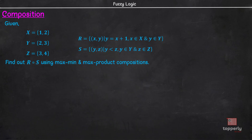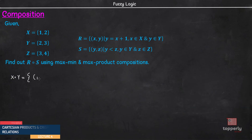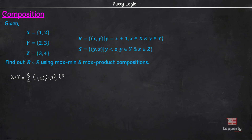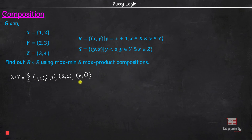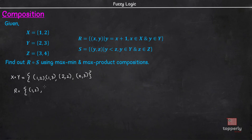Now let us take an example to understand this concept better. We are given the universes X, Y, and Z, and the relations R from universe X to Y and S from universe Y to Z, and we are asked to find R composition S. First, we need to find relation R. X cross Y is given by the set of ordered pairs: (1,2), (1,3), (2,2), and (2,3). Among these, the ordered pairs which satisfy the condition Y = x+1 are (1,2) and (2,3). Therefore, relation R equals the set of ordered pairs {(1,2), (2,3)}.